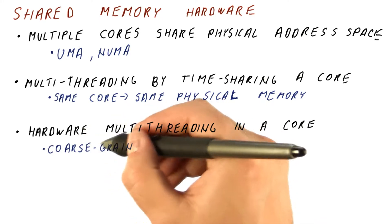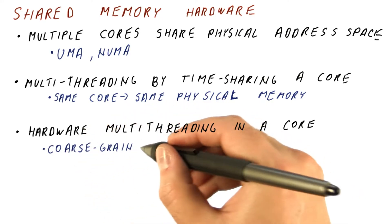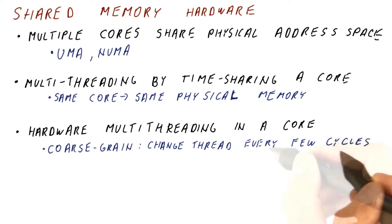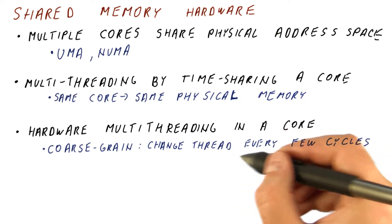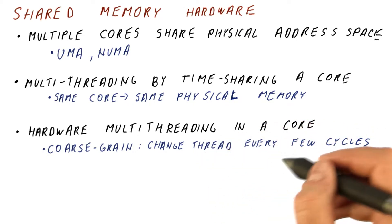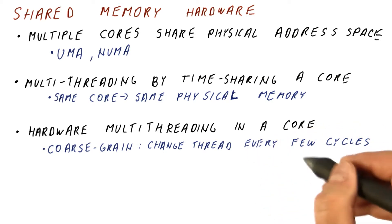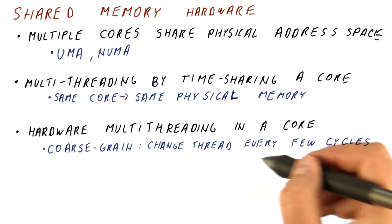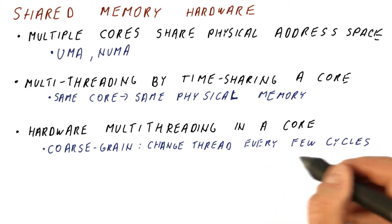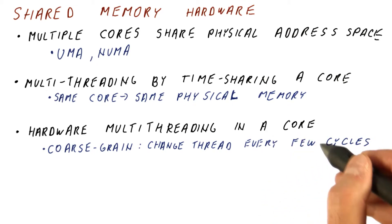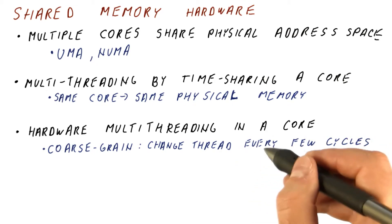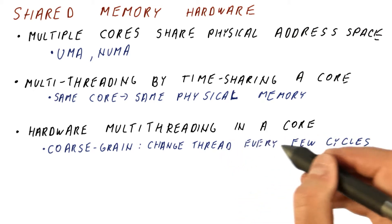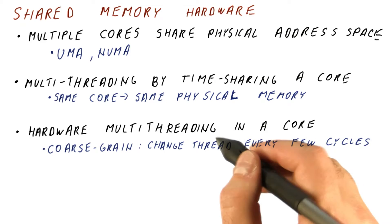This hardware multi-threading can be at a coarse grain, where we change the thread we are working on every few cycles. We need hardware support that switches between threads this often, because without it we would spend all of the time saving and restoring registers. So every thread needs its own set of hardware registers.